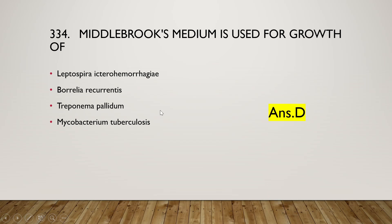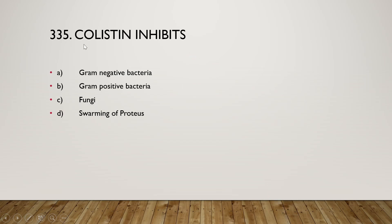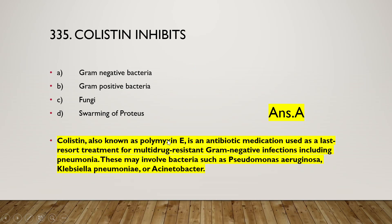Colistin inhibits gram-negative bacteria, gram-positive bacteria, fungi, or swarming of Proteus? Swarming of Proteus means a cluster of Proteus present at the same location. The answer is option A — colistin inhibits gram-negative bacteria.